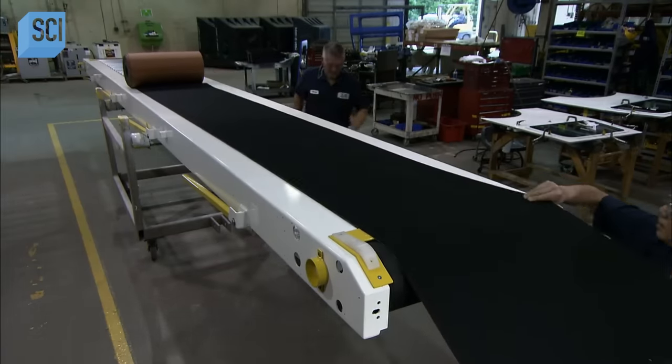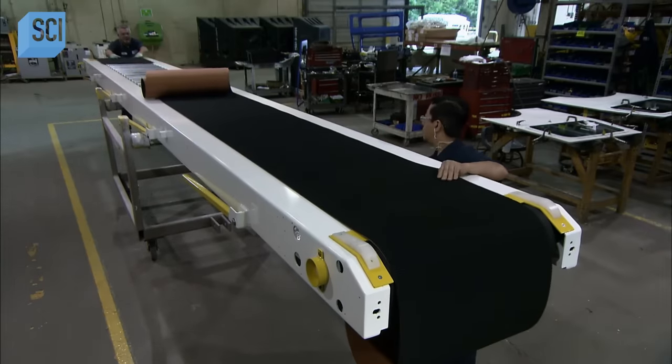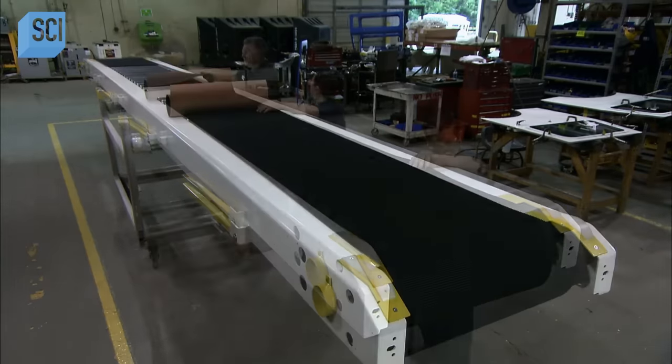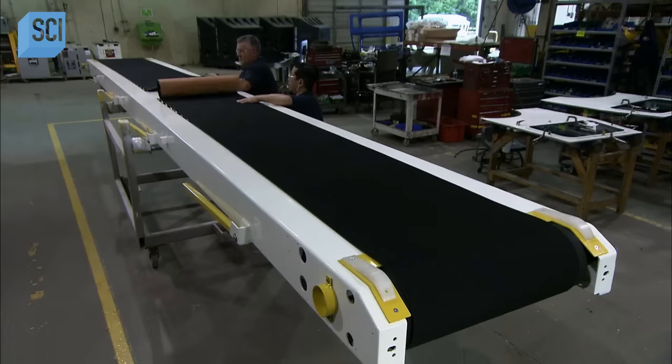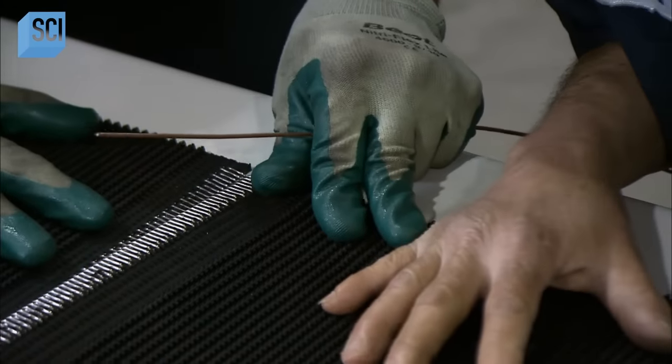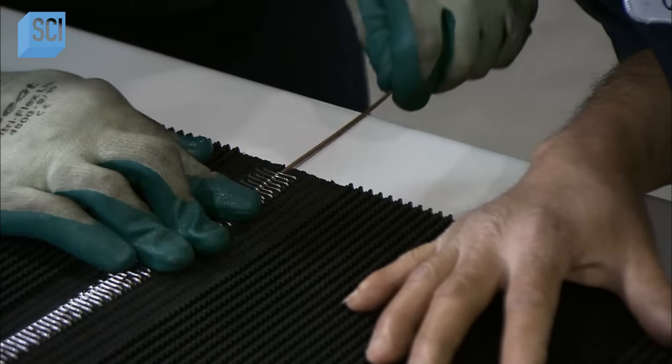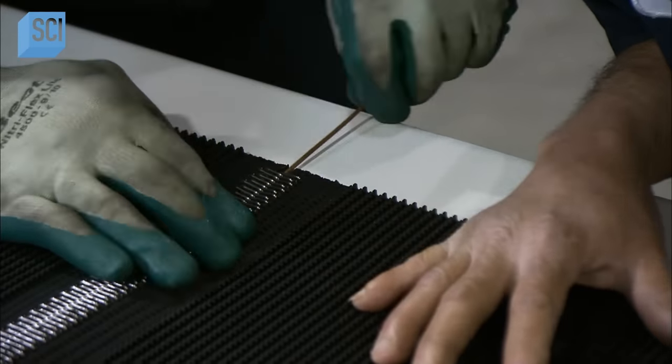The belt itself is made of high-strength, tire-grade rubber, with an anti-skid texture on the surface. To be long enough to loop around the 7.5 meter long conveyor, plus the end rollers, the belt is 15 meters in length. The ends have teeth which fit into each other like a zipper, and fasten with a metal pin.